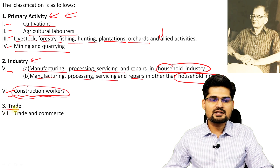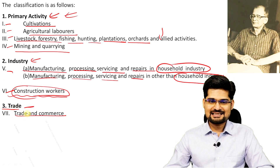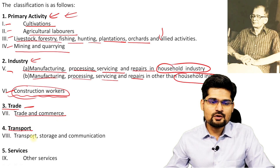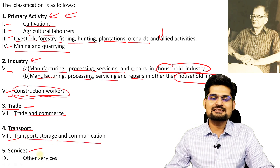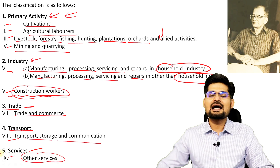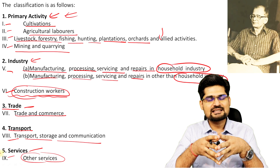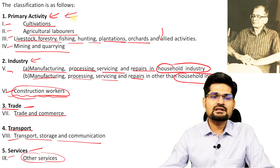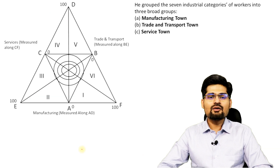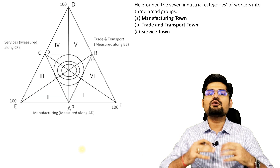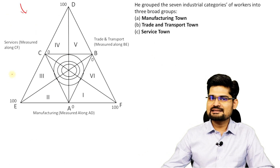The third major pillar is trade, under which trade and commerce is the seventh category, transport, storage, and communication is the eighth, and other services is the ninth. These are the different categories of workers used for classification. To understand this classification in a more interesting way, there is a triangle of Ashok Mitra which we need to understand — he grouped seven industrial categories of workers into three broad groups: manufacturing towns, trade and transport towns, and service towns.